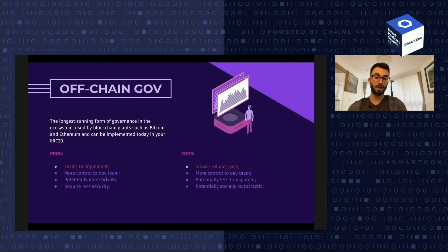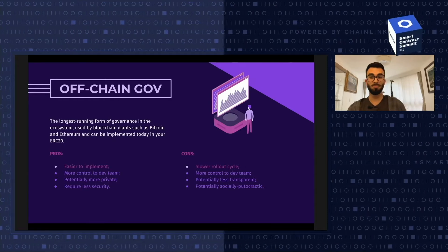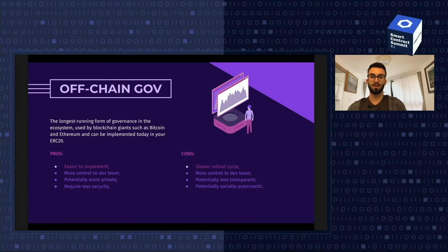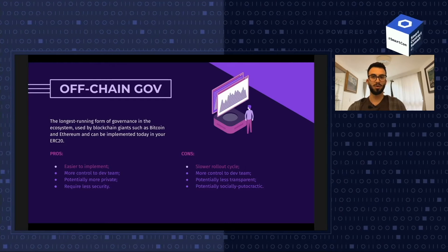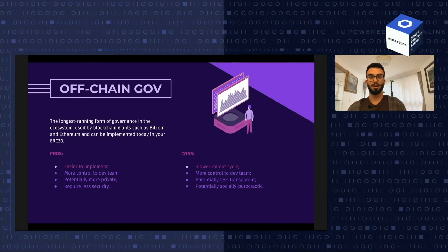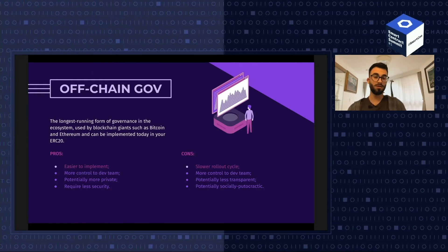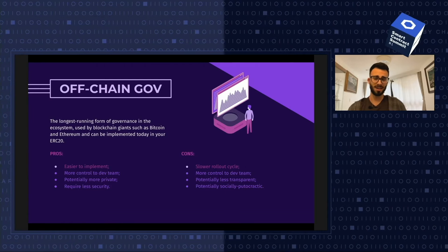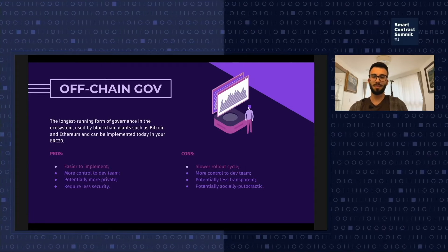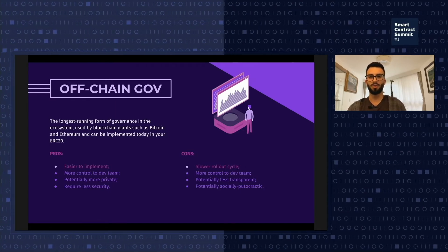The cons of off-chain governance are usually a slower rollout cycle and more control to the dev team — which is also a con because the dev team might oppose community choices, leading to backlash. It's potentially less transparent because things are happening off-chain and people might overlook details. And it's potentially more socially plutocratic — people with higher influence or more followers can tip the balance of voting in their favor rather than what's best for the protocol.